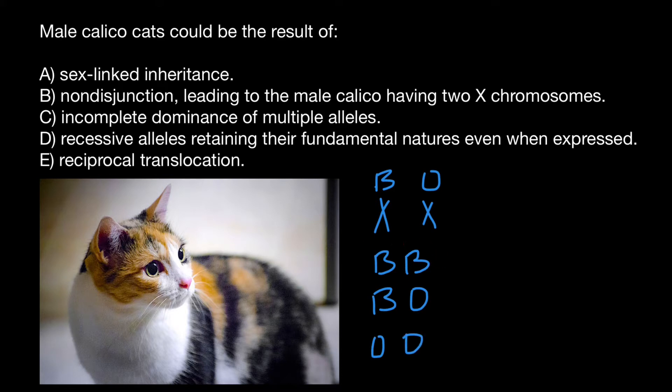Of course, B B would lead to the black color of the cat, or white and black, because white is a base color. B O means black and orange. So exactly what we see here. And if female cat has two O alleles, then cat is going to be white and orange.